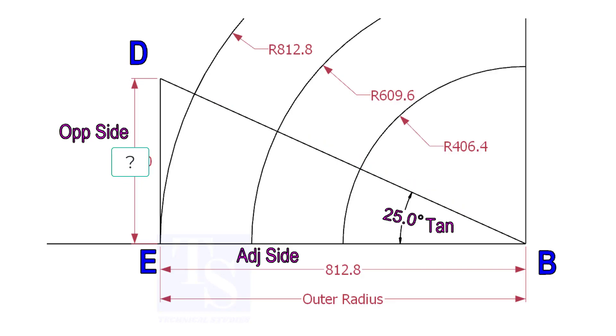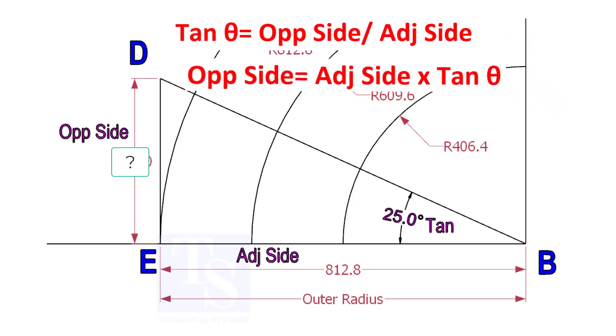To draw the line DB, we need to know the length of line ED. To calculate ED, we need to apply the formula: tan-theta equals opposite side divided by adjacent side. Opposite side equals adjacent side multiplied by tan-theta.